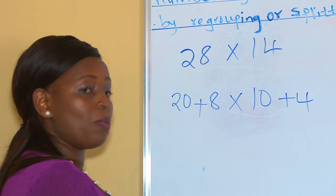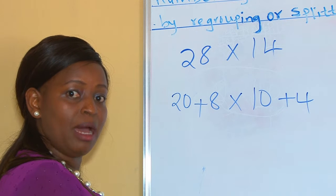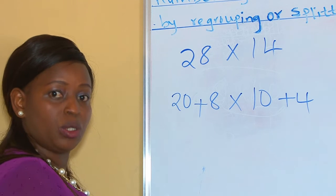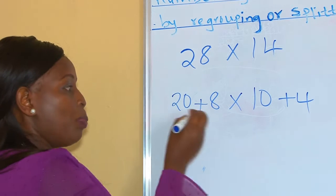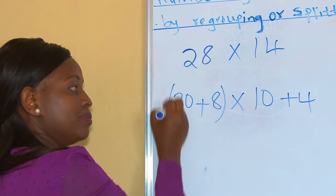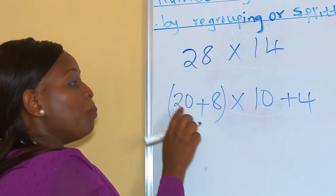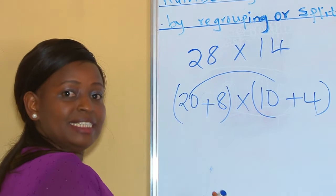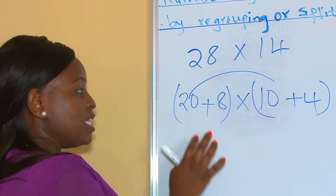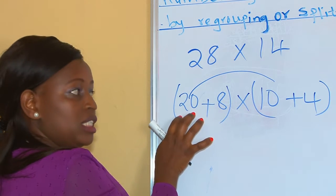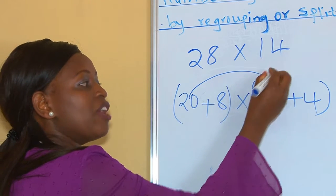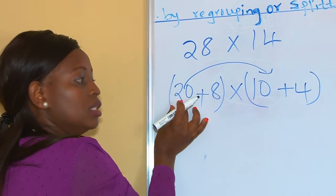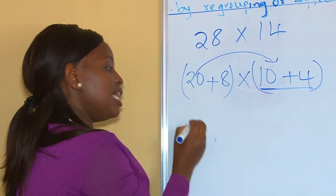Once you are done with the regrouping or splitting of the digits in each number, we come now into multiplication. When you are multiplying, you pick the first number and make sure that you multiply it with everything on the other side. So on the left, once you pick a digit here, you make sure you multiply everything on the right. Let's begin with 20 and multiply everything on this side.